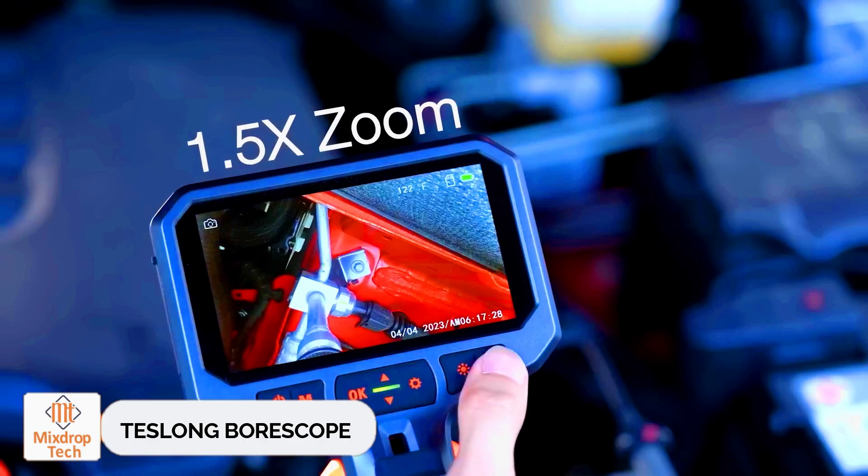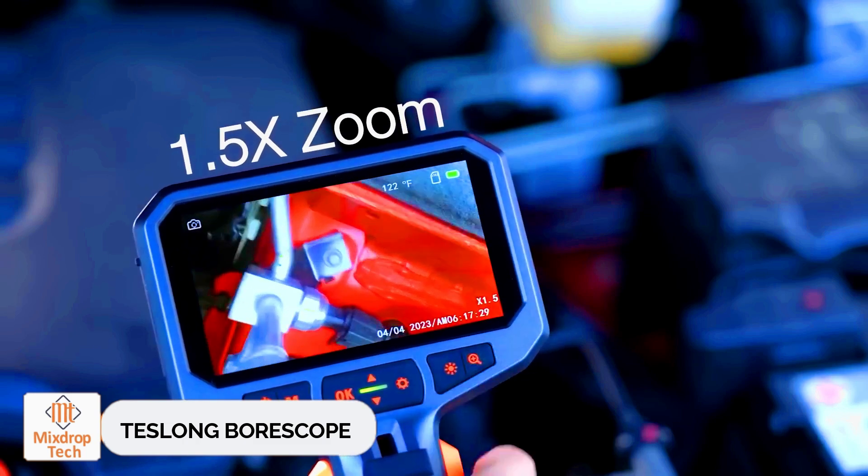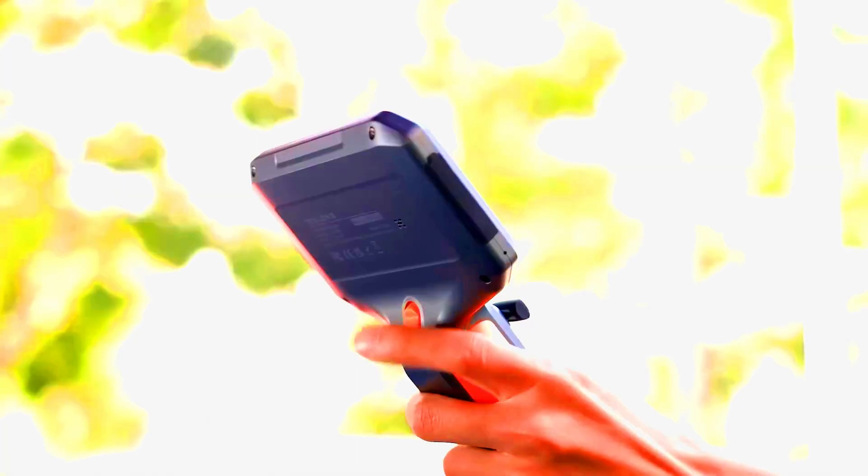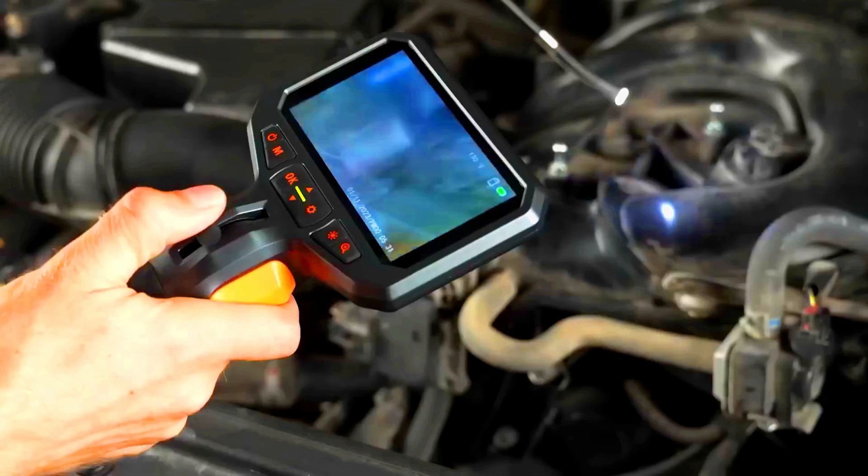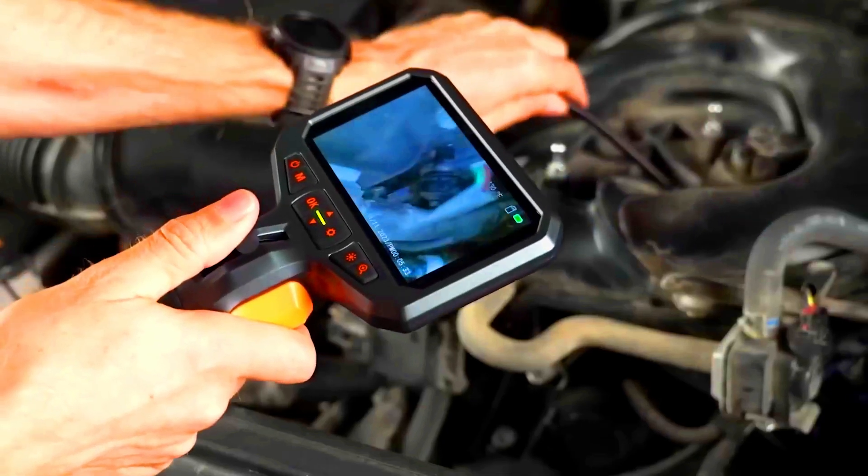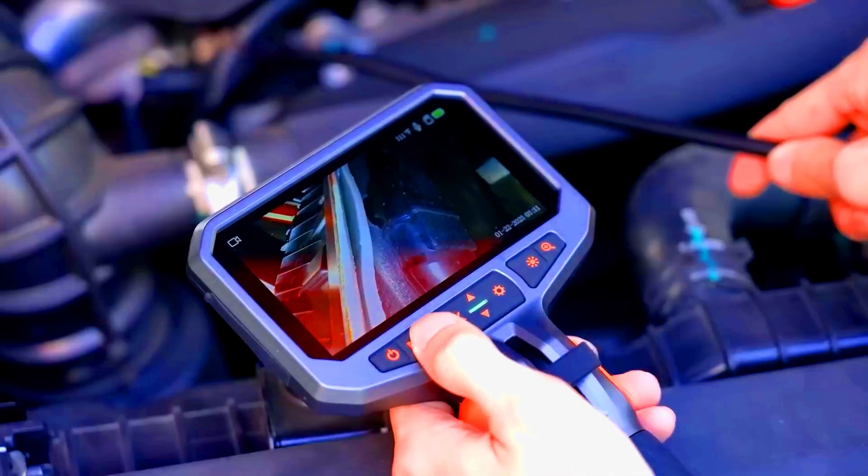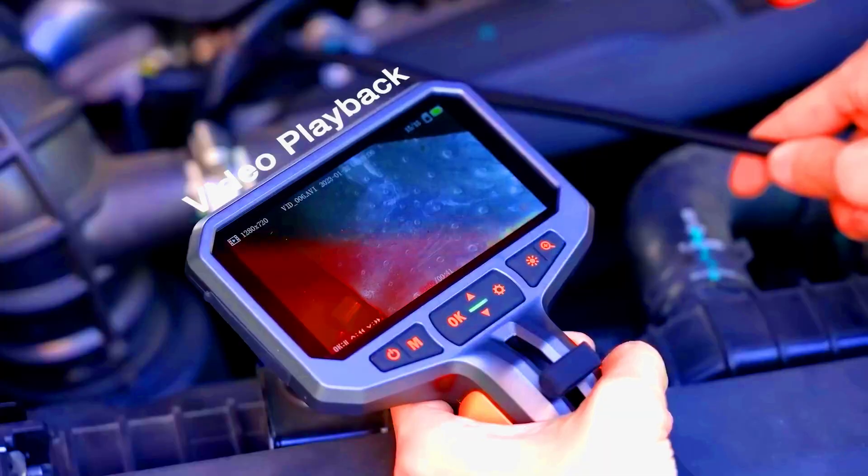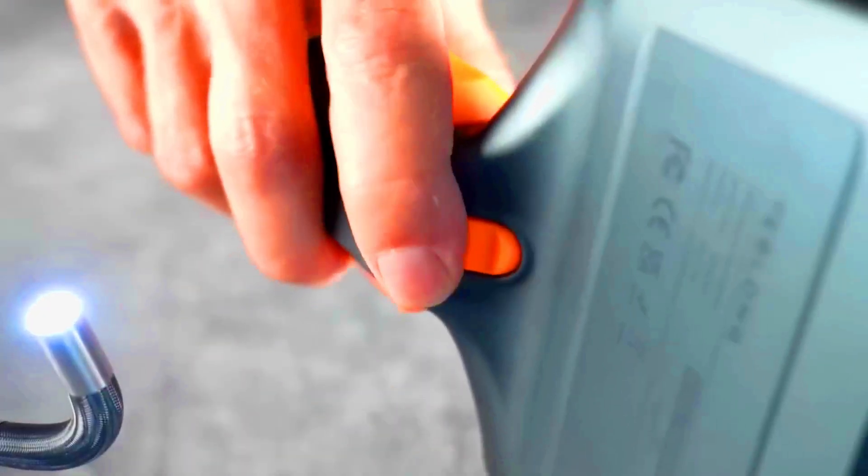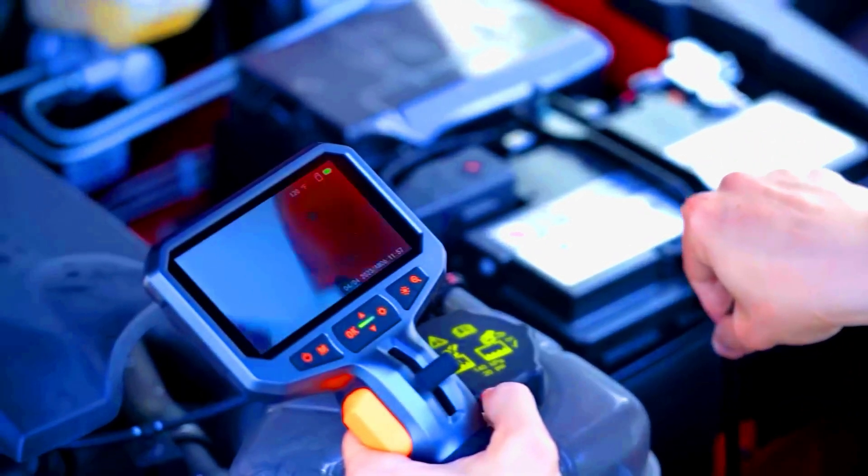Teslong Boroscope. The Teslong TD450S is a standout in the world of boroscopes. This device is incredibly useful for inspecting the insides of various mechanisms. After inserting a flexible cable with a camera into the desired area, the user can view the situation on a 4.5-inch IPS color screen. This allows them to make informed decisions about further work.